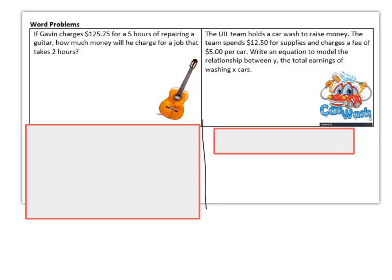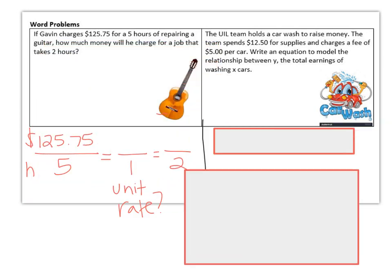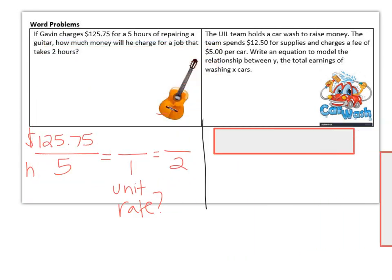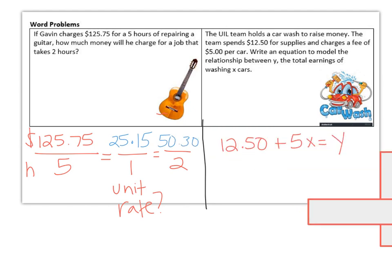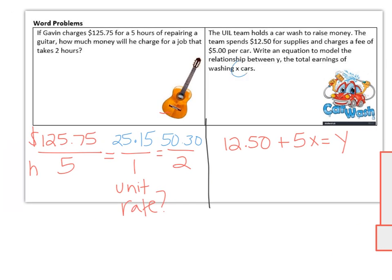On the next question, it's a word problem. Looking again for the key words, and our equation would be right there. And so you'd want to figure out the unit rate. How much would he charge for just 1 hour? And then you can easily figure out how much he would charge for 2 hours. And so you would have to divide that, and you'd get $25.15 for 1 hour, which gives you $50.30 for 2 hours. On the car wash question, that would be your equation. And it doesn't ask you to solve it. It just wants you to write an equation. So x is the cars, and y is how much they would earn in total.